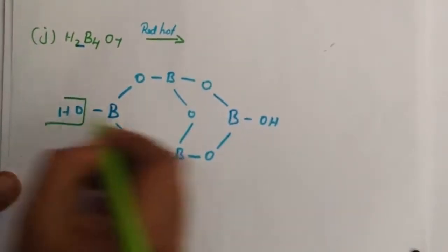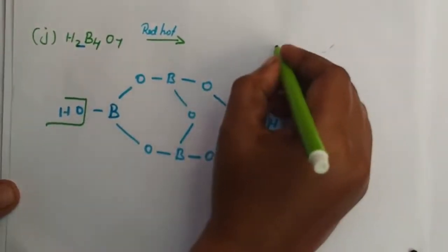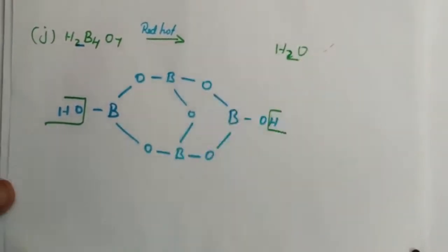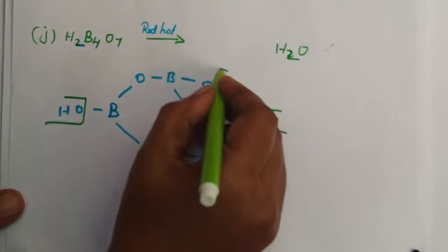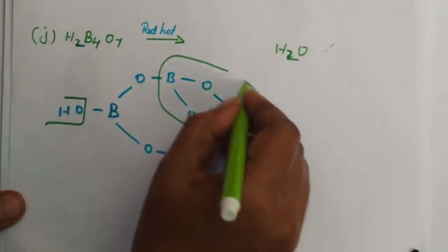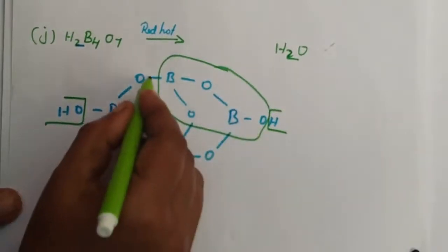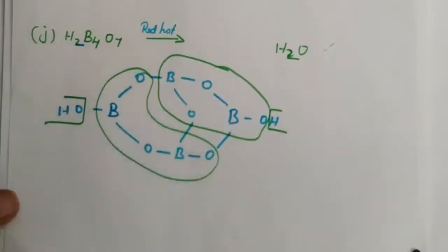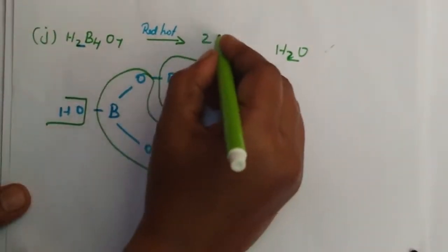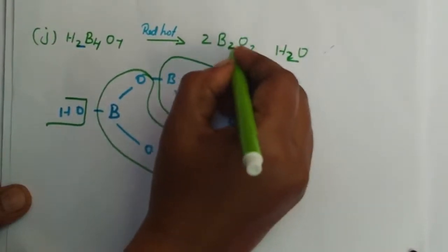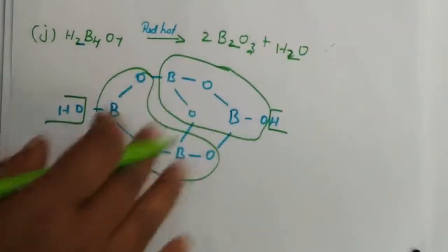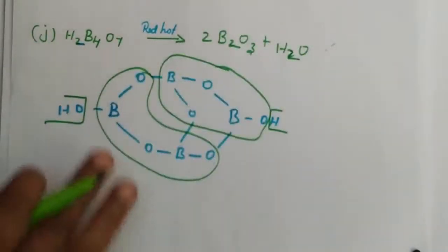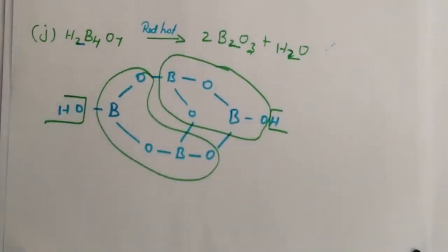Now how do we split this? When heated, H2O is released and the two borons form B2O3. The product is B2O3. This is the complete reaction: H2B4O7 heated yields two B2O3 plus H2O. So this completes all the reaction questions. All the answers are explained. Thank you.